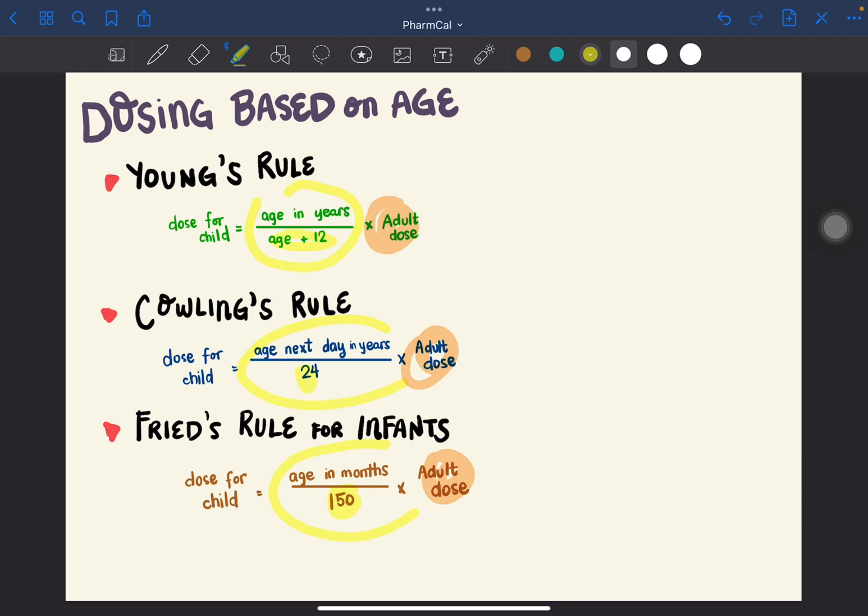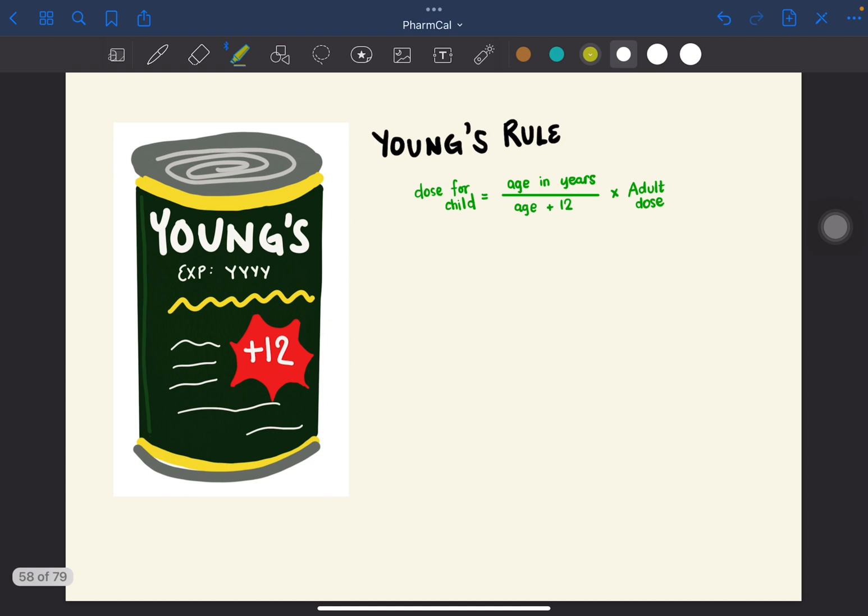I have visual mnemonics prepared to make memorization easier. For Young's rule, the formula is age in years over age plus 12 times adult dose. If you're familiar with Young's sardines, this is the basis of the visual mnemonic. Here you can see year, age in years plus 12. So age in years over age plus 12 times the adult dose.